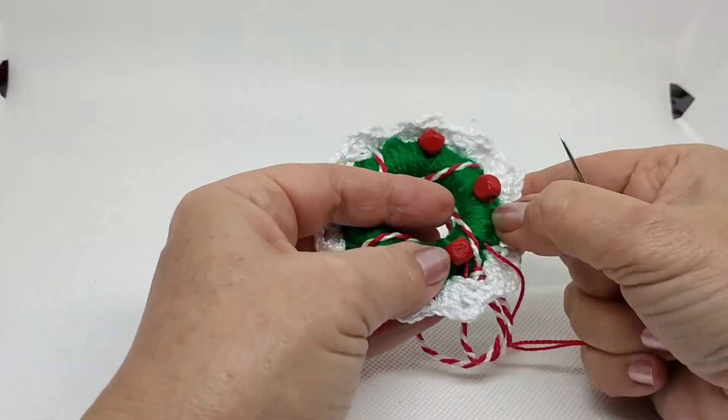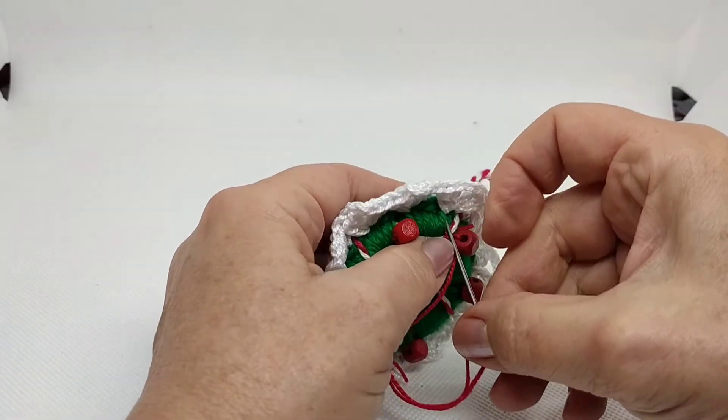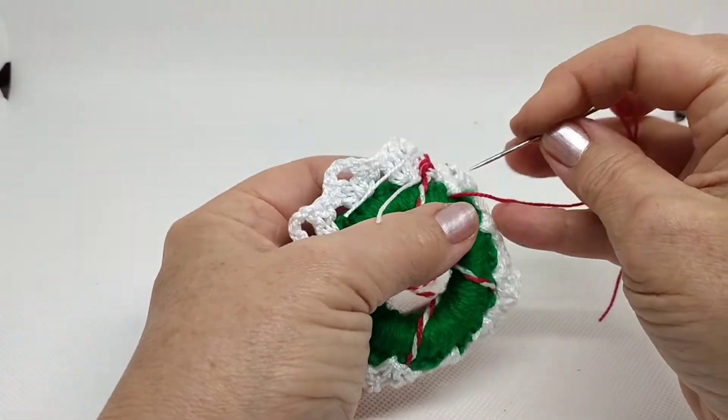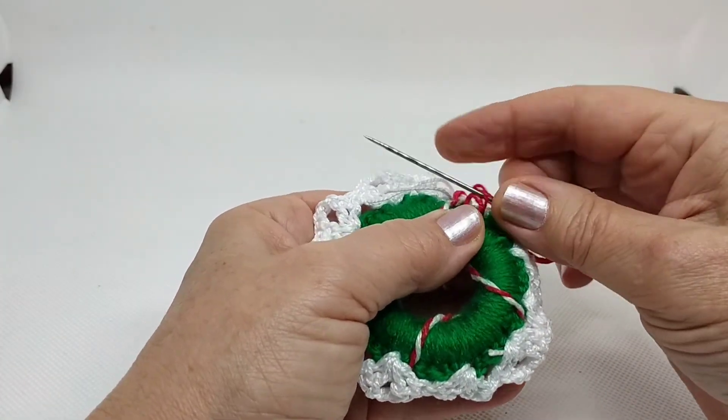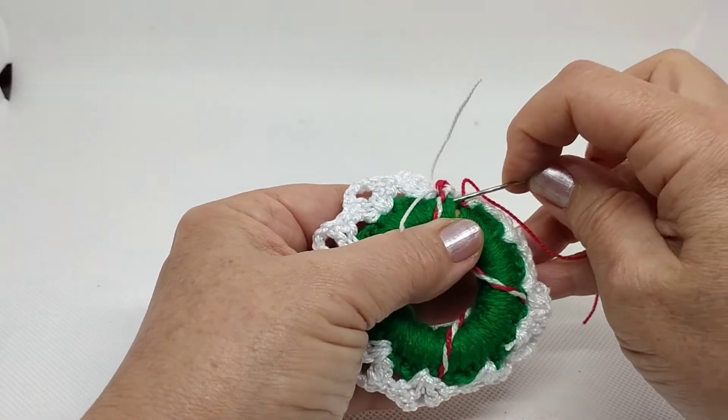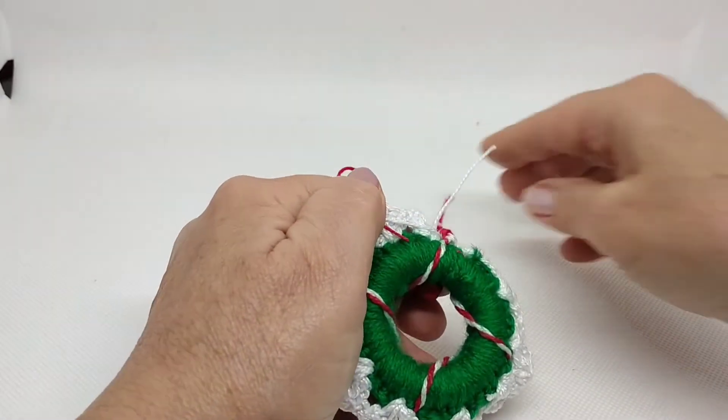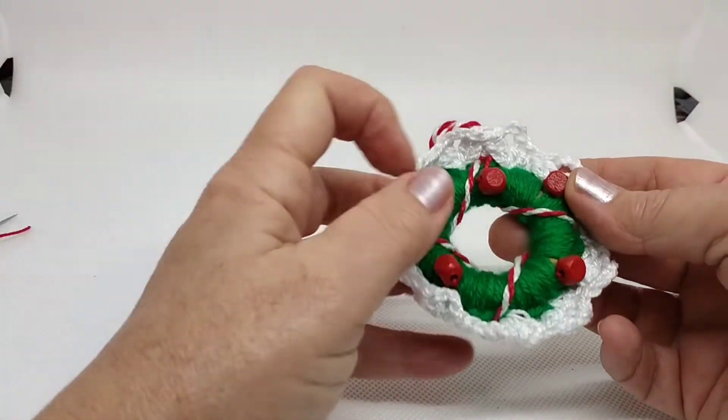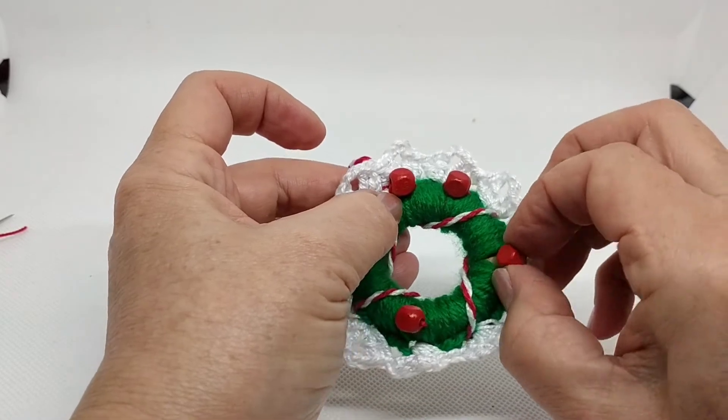Una vez ya las tenemos todas, ya es nomás apuntar un poquito esta hebra roja para que no se nos vaya. Podemos apuntar por detrás. Damos una apuntadita, escondemos el cabito y cortamos. Así va quedando nuestra corona.